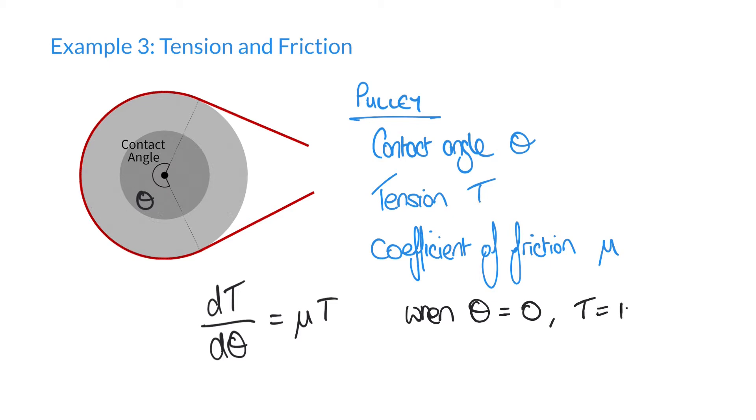And so we're going to answer two parts of this question here. We're going to first of all determine the tension T at an angle of two radians if mu, the coefficient of friction, is equal to 0.25. And the second thing we're going to do is determine the angle theta if the tension is 200 newtons.